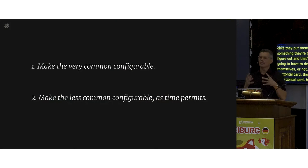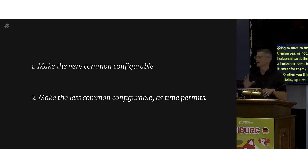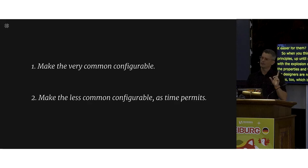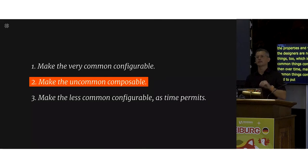With the explosion of Figma properties and variants, the mindset has been: make the very common things configurable first, then make less common things configurable over time as you have capacity. I think you need to change that mindset. Before you chase more properties, start thinking about enabling teams to compose things themselves with greater and greater flexibility.